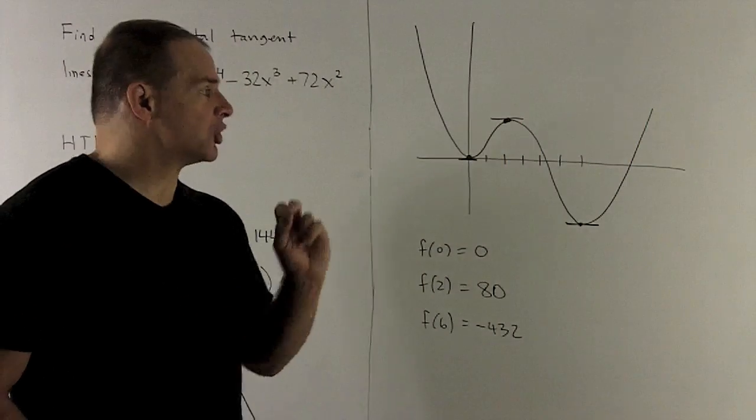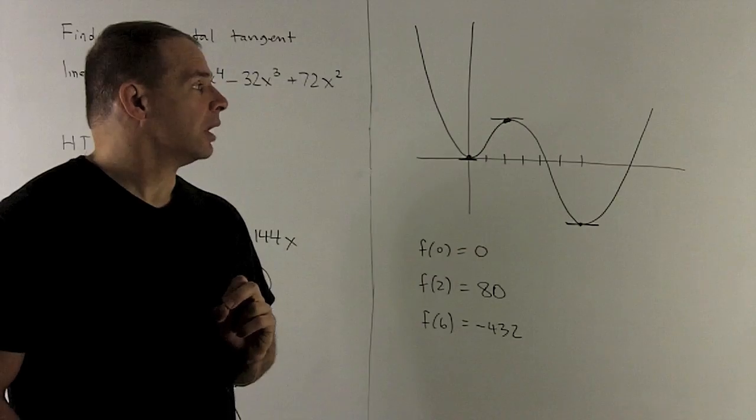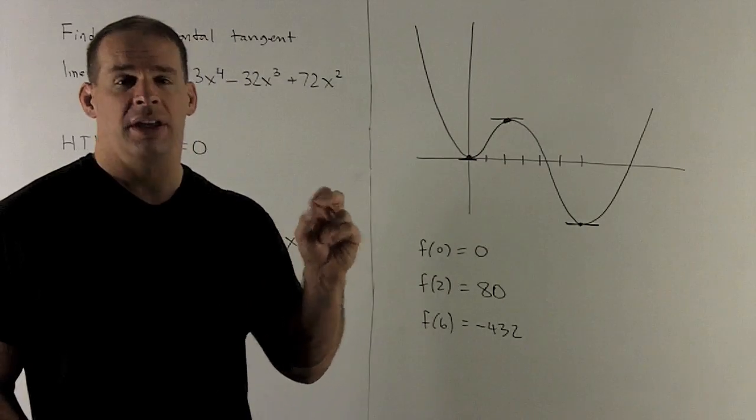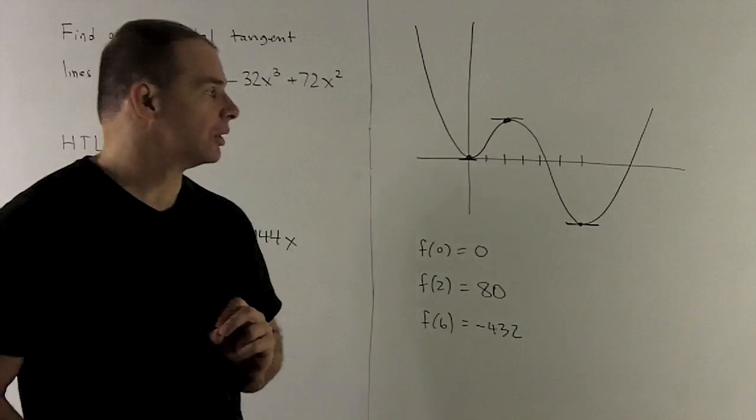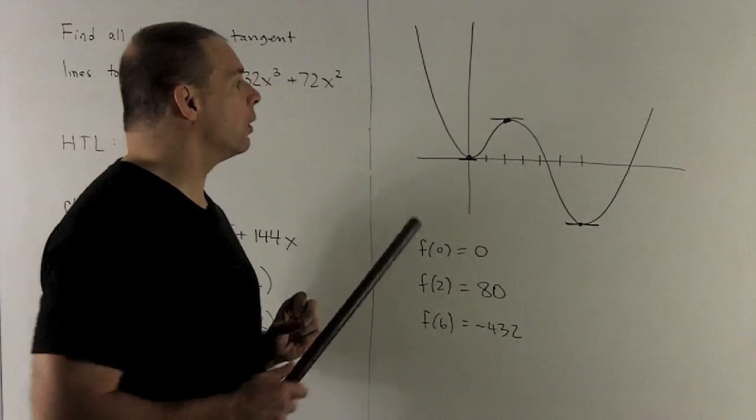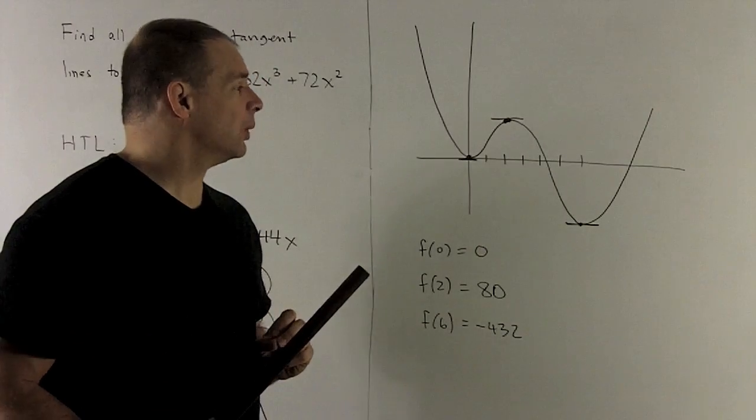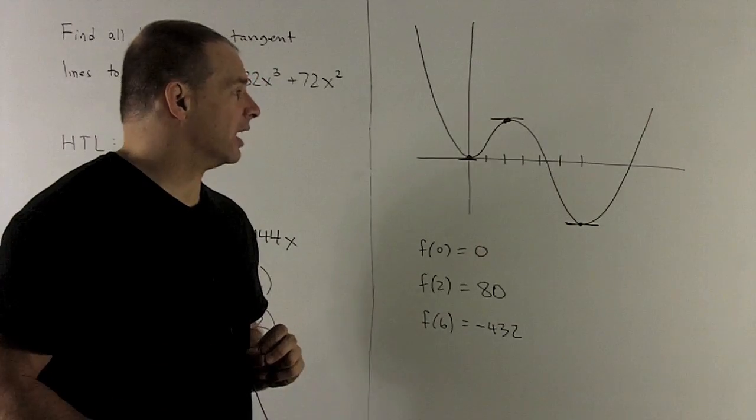So what's going to happen? This is what our general graph looks like, and we see that the peaks and the valleys are happening exactly at our points. We have a horizontal tangent line at 0, horizontal tangent line at 2, and a horizontal tangent line at 6.